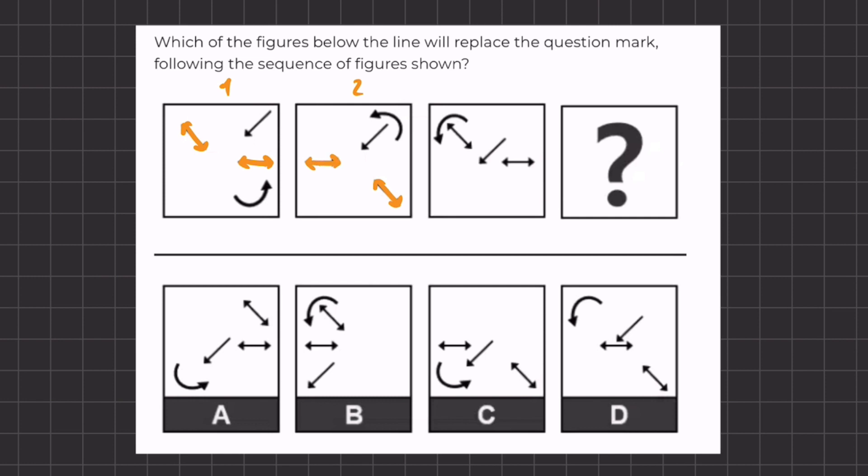So if we try to recognize some kind of pattern, we can tell that the arrows are moving in the direction that they're pointing.